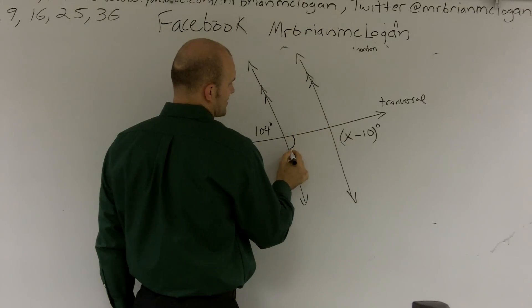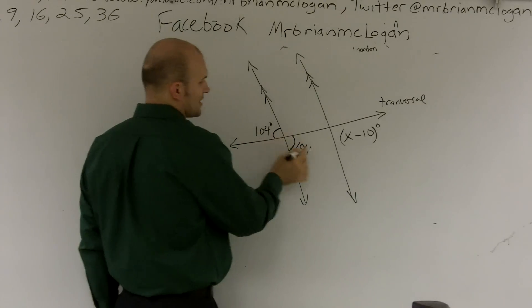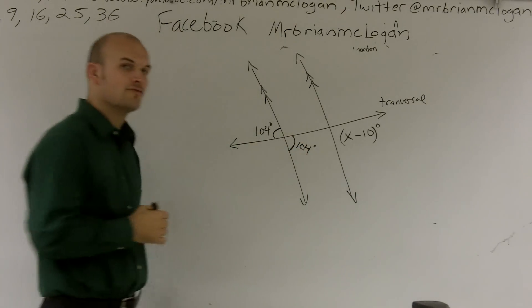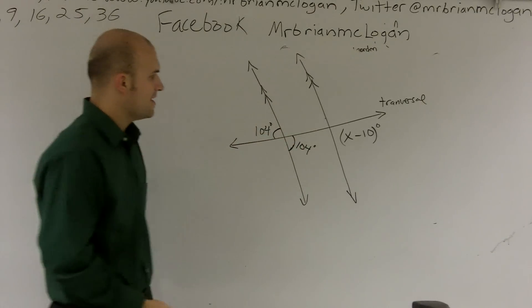So let's just make it easy right here. I know that 104, these two angles are equal to each other because they're what we call vertical angles, opposite angles.